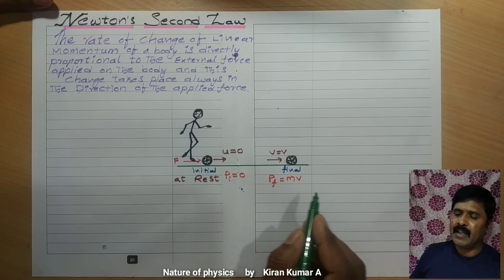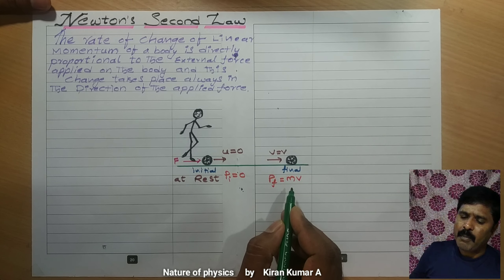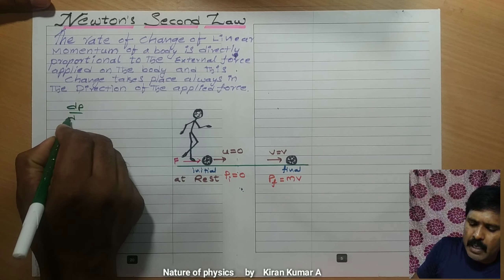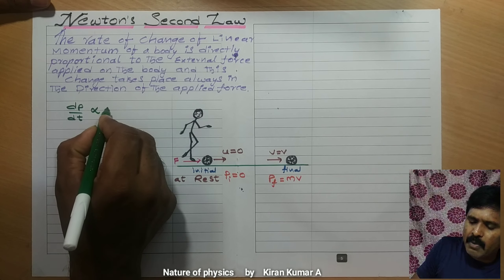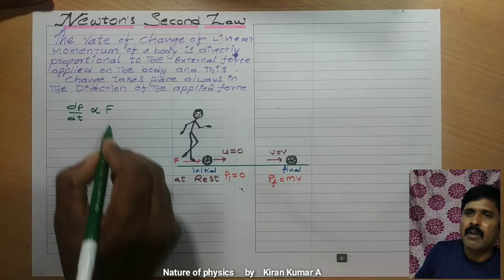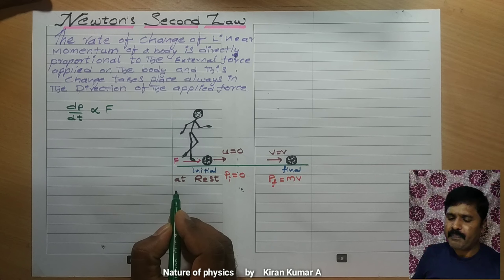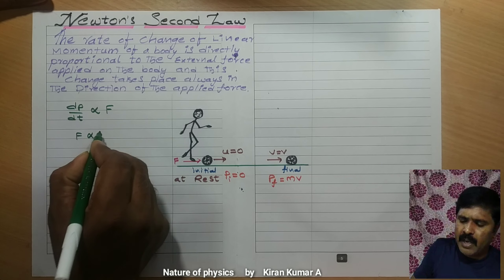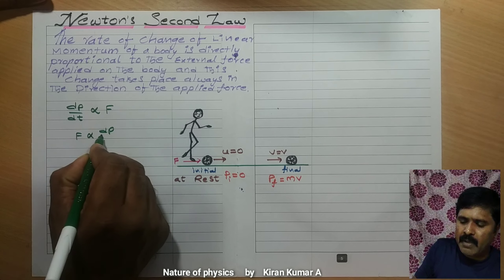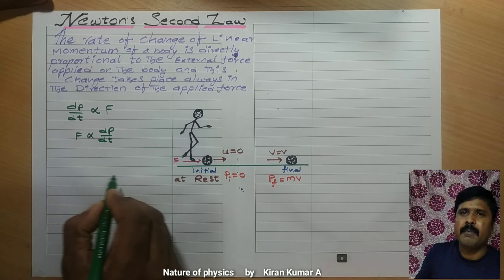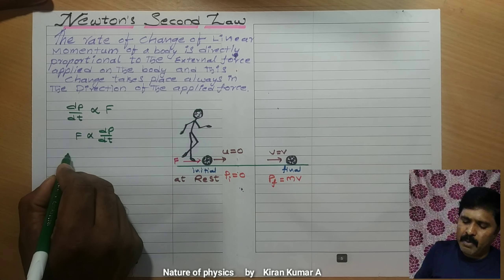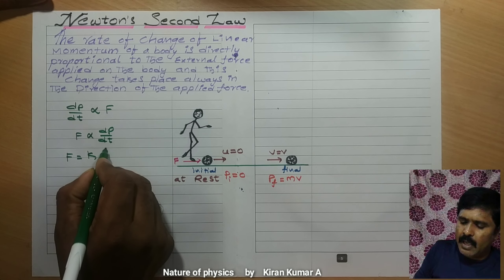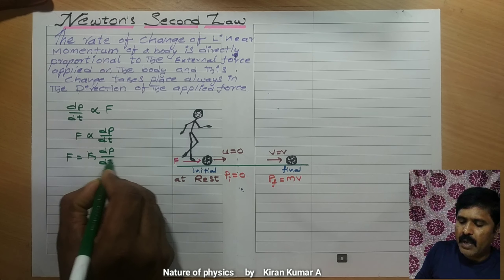According to Newton's Second Law, the rate of change of momentum, that is dP divided by dt, is directly proportional to the external force F. So we can write F is also directly proportional to dP divided by dt, and with proportionality constant k, F is equal to k times dP divided by dt.